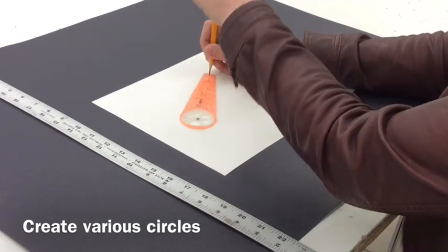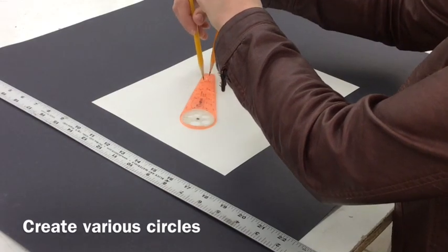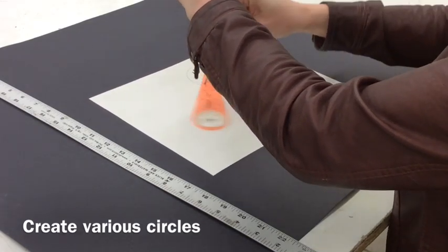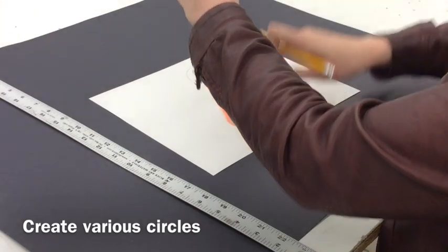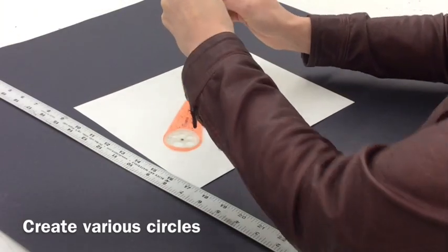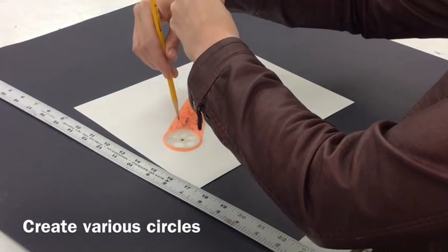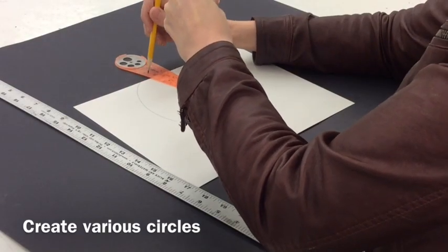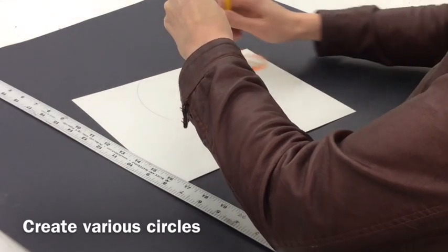So I'm going to put my pencil, particularly a short pencil, at the skinny end of my compass. And I'm going to choose a radius, and I'm going to create different size circles. The bigger the radius is between pencil one and pencil two, the bigger your circle will be. The smaller it is, the smaller your circle will be.